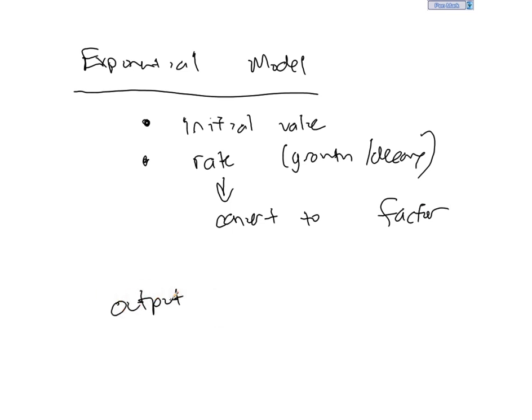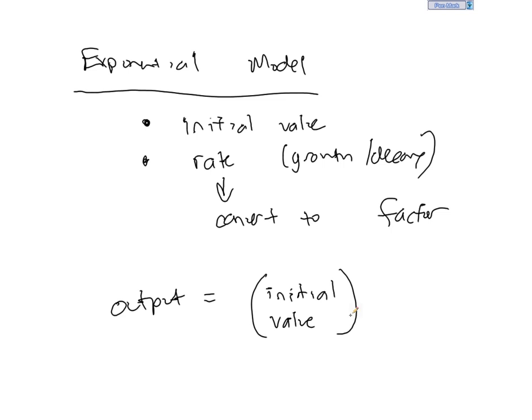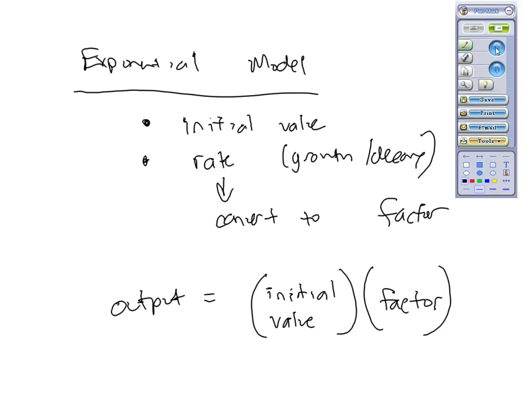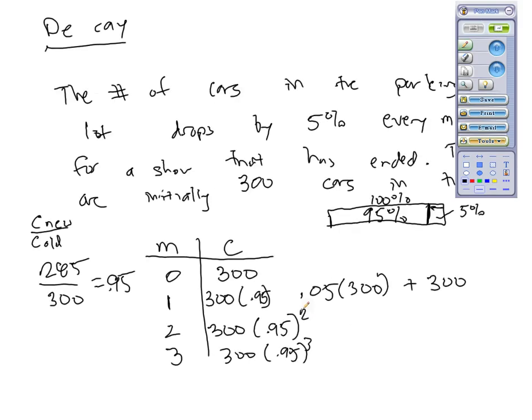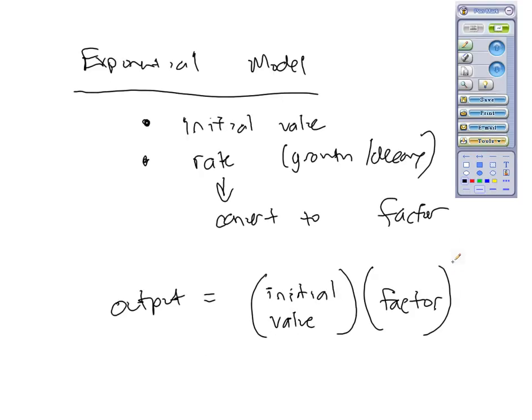And what do we do? Well, to get the output, we had to take the initial value, we had to multiply it by the factor, and how many times did we multiply it by the factor? Well, let's take a look back. We multiplied it based on what the current value of the input was. So why don't we just call that exponent input? That way, whatever input value you want to know the output for, that's how many times you're going to multiply by the growth factor.